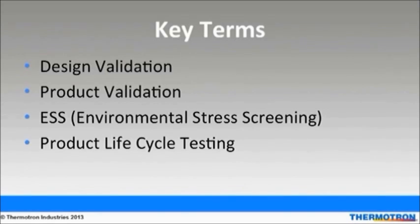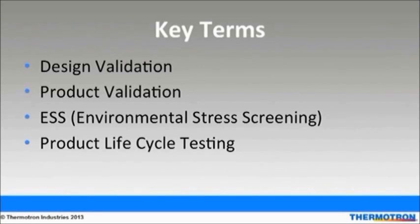Environmental stress screening uses a variety of different stresses such as thermal cycling to force latent defects in a newly manufactured or repaired product or component, typically electronic. The latent failures represent catastrophic or permanent failures. The surviving products or components are assumed to have higher reliability than a similar unscreened population.